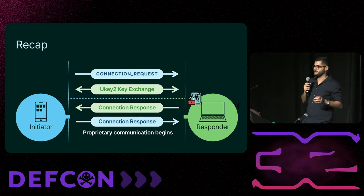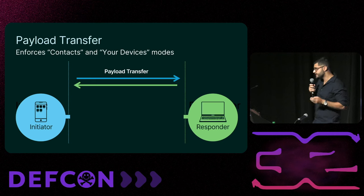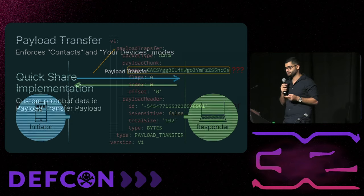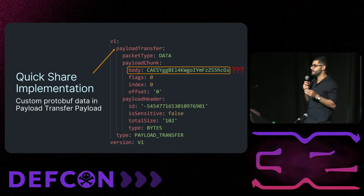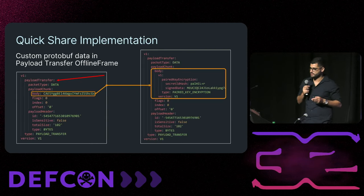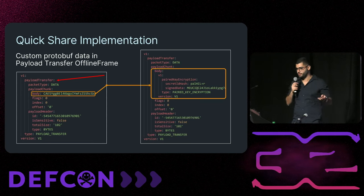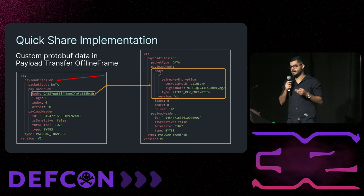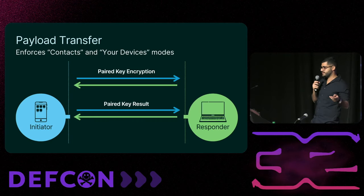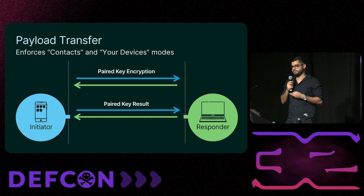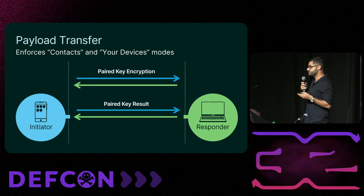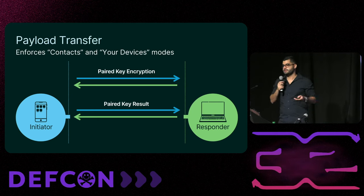After the proprietary communication begins, both sides exchange payload transfer packets. Using our sniffer, the payload transfer packet contains binary data which was initially unclear. With the help of another protobuf file found in the Chromium open source project, we decoded this binary data and discovered the payload transfer packet contained another packet called PairedKeyEncryption. Both sides exchange this PairedKeyEncryption packet followed by a PairedKeyResult packet, which are used among other things to enforce device visibility modes controlling who can send data to them.